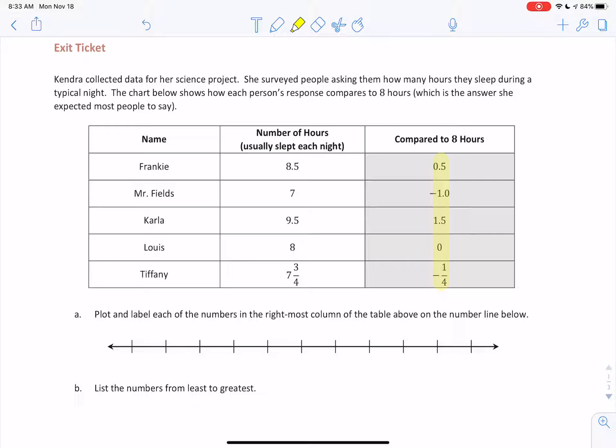That's represented by a positive number, such as you see for Frankie: 8.5 hours is 0.5 hours more than 8. Mr. Fields sleeps 7 hours, which is 1 hour less, represented by a negative number. We can see that each of these people has a differing amount. Notable is down for Tiffany, we see that we have fractions. It's the same information, just represented in fraction form.